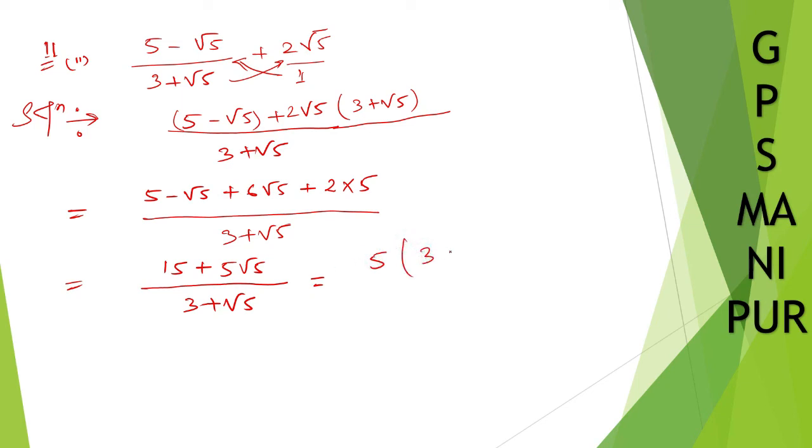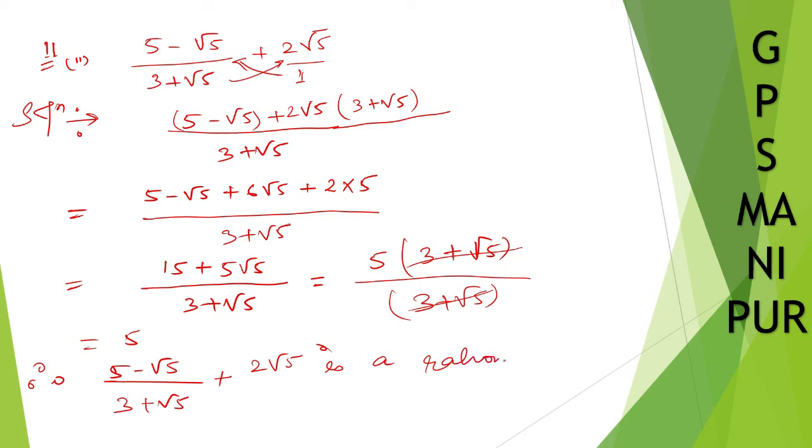This equals 5 times 3 plus root 5 divided by 3 plus root 5, which equals 5. So 5 minus root 5 divided by 3 plus root 5 plus 2 root 5 is a rational number. Thank you so much, we'll meet in the next video.